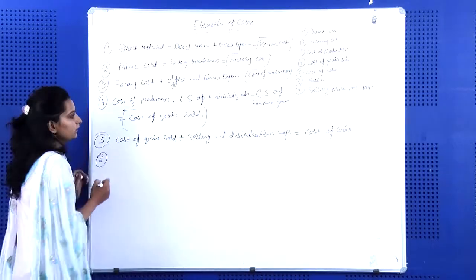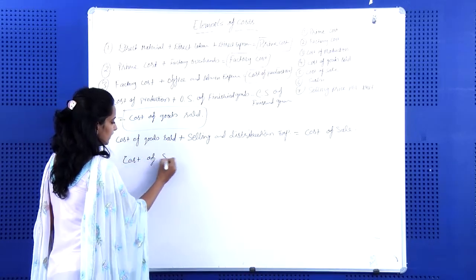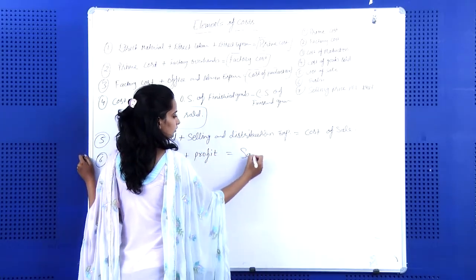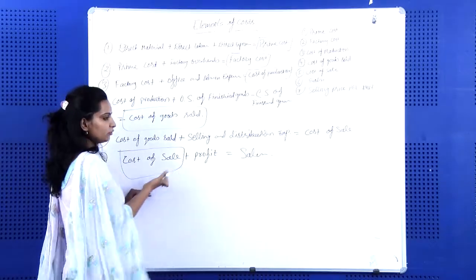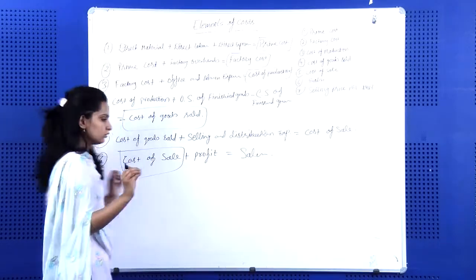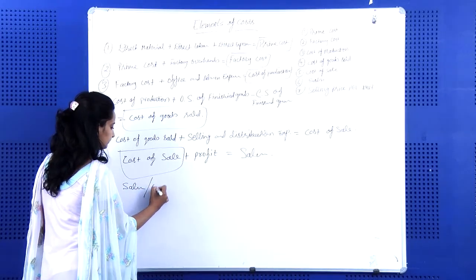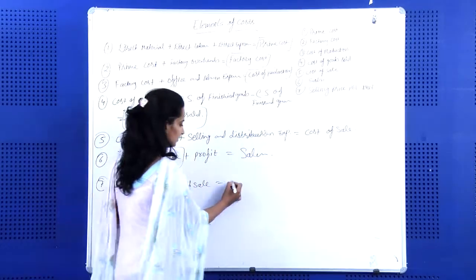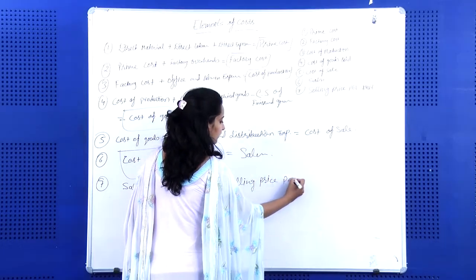Further, we can calculate sales: cost of sale plus profit equals sales. This means if we add profit to the total cost, that becomes our sales. If we want to calculate the per unit selling price, we divide sales by quantity of sale, which gives us the selling price per unit.